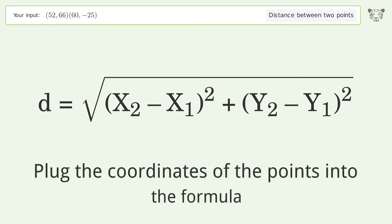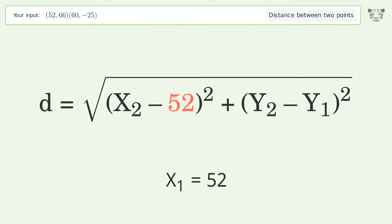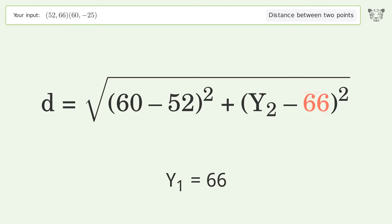Plug the coordinates of the points into the formula: x₁ equals 52, x₂ equals 60, y₁ equals 66, and y₂ equals negative 25.